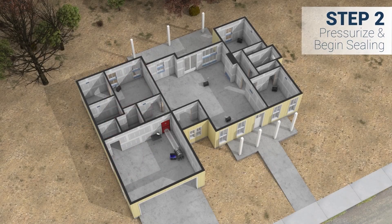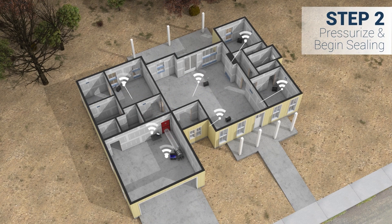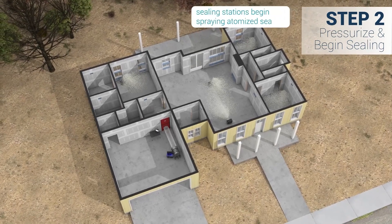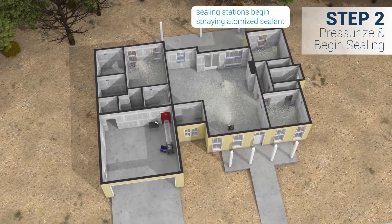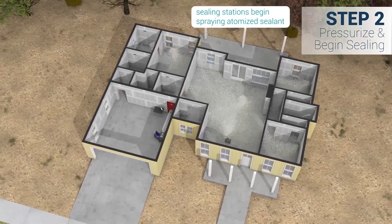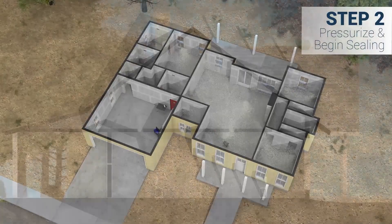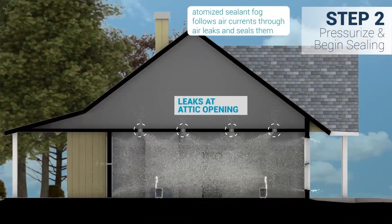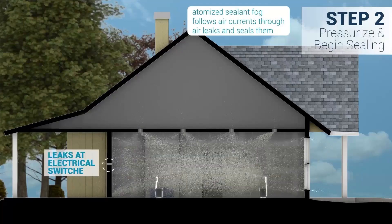The system creates positive pressure inside the space, forcing air to flow from areas of higher pressure to areas of lower pressure through leaks. This airflow draws the atomized, non-toxic fog of sealant into gaps, where it bonds to seal them. These gaps are typically found in areas such as electrical switches and around windows and doors.